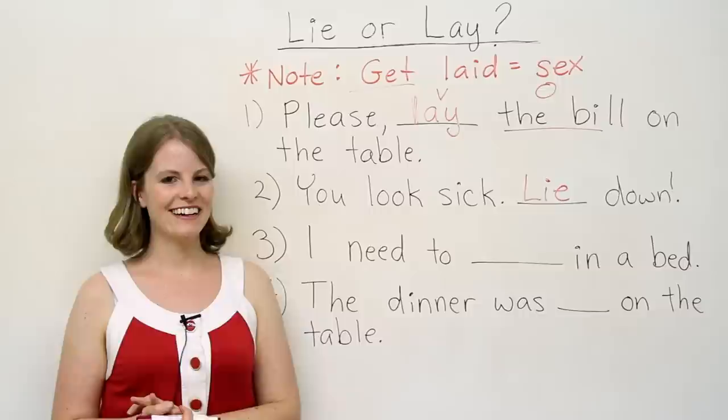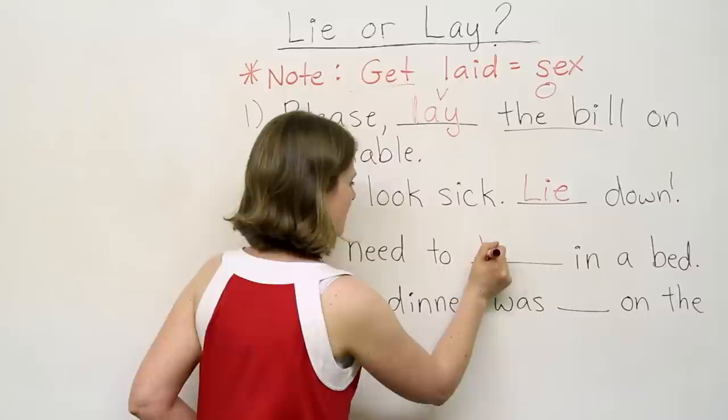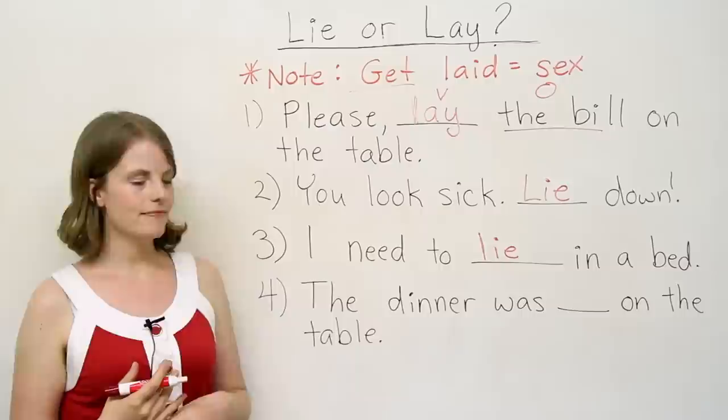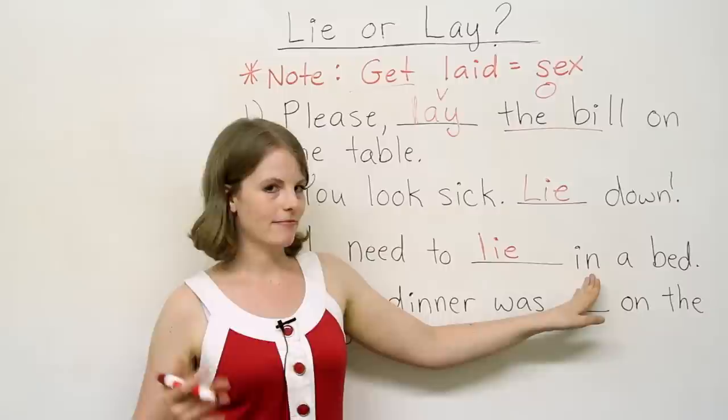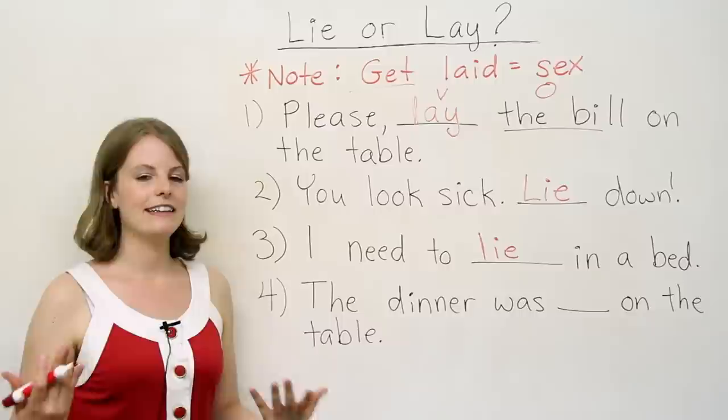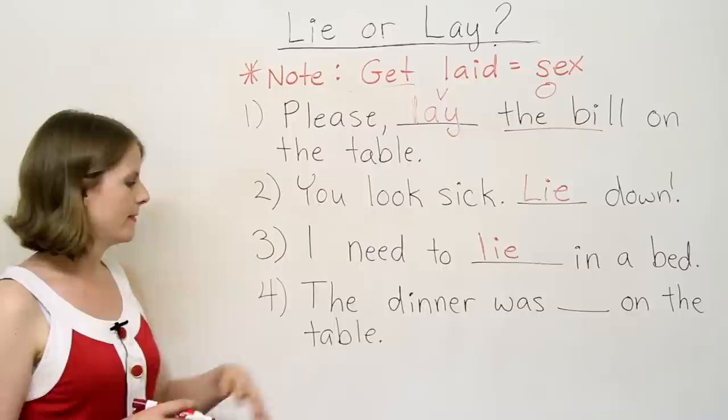Number three. I need to in a bed. Not get laid. I need to lie or lay. I need to lie down. I need to lie something. We do have a preposition here, like I said before, but we do not have an object. I need to lie. I need to lie down. I need to lie in or on something. So it's lie.